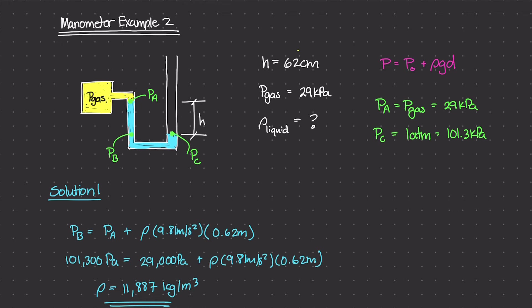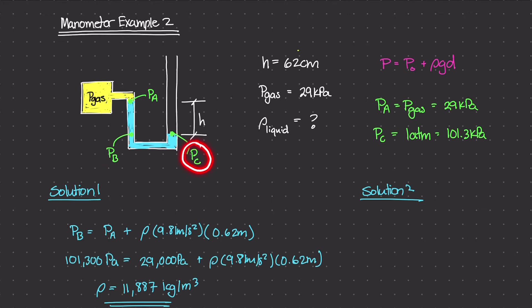That was solution one. In solution two, we take our datum — the start of H — to be at the line where P sub C equals P sub B. Pressure at C equals 101.3 kilopascals because it's open to the atmosphere, and we already know P sub A. So we write: P sub A equals P₀ — which here is P sub B or P sub C — plus rho times G times D.